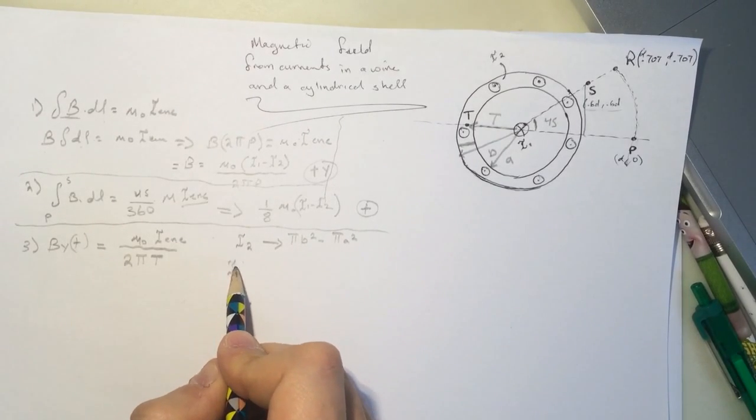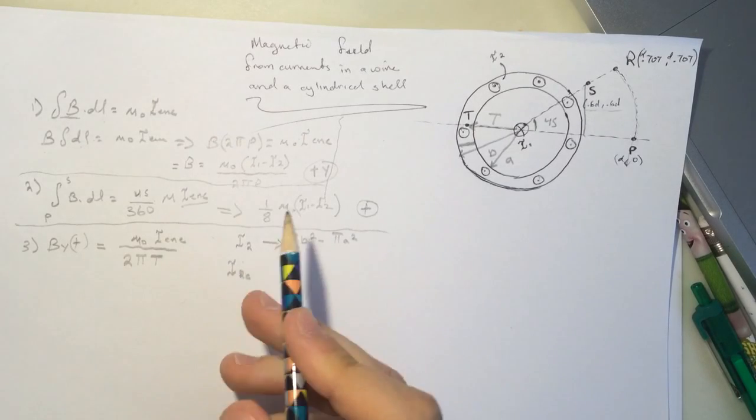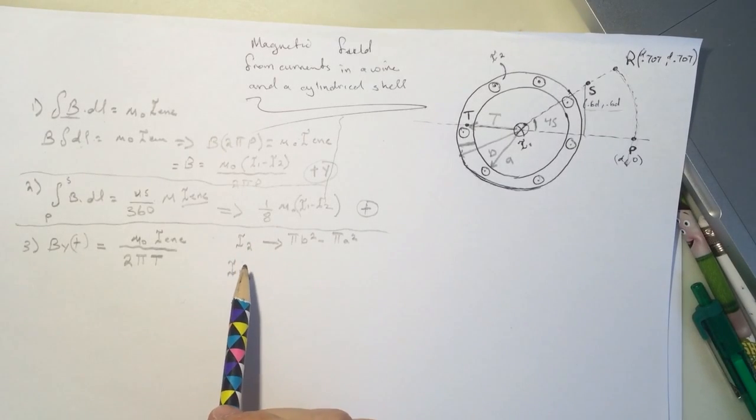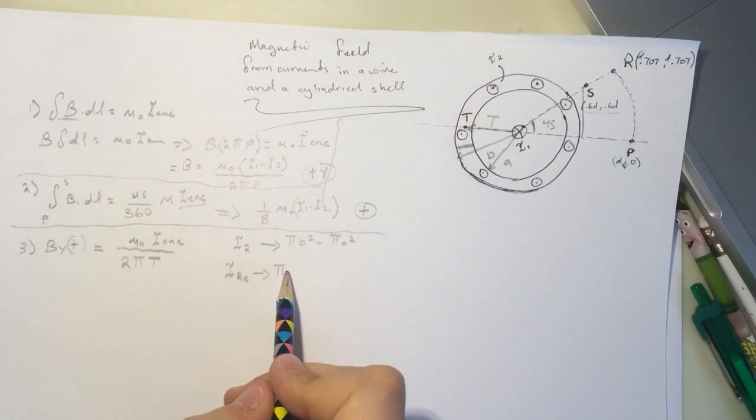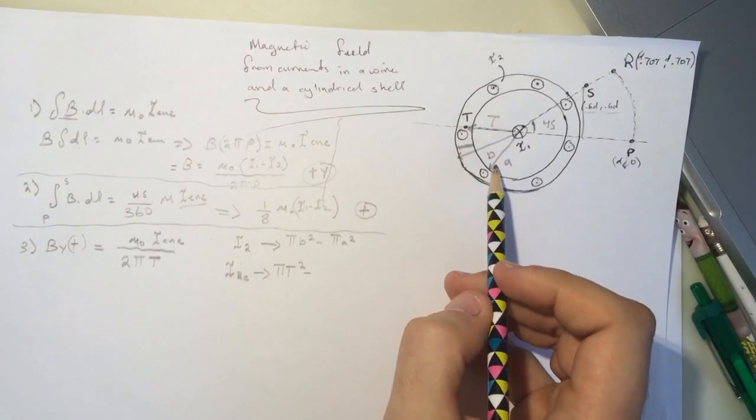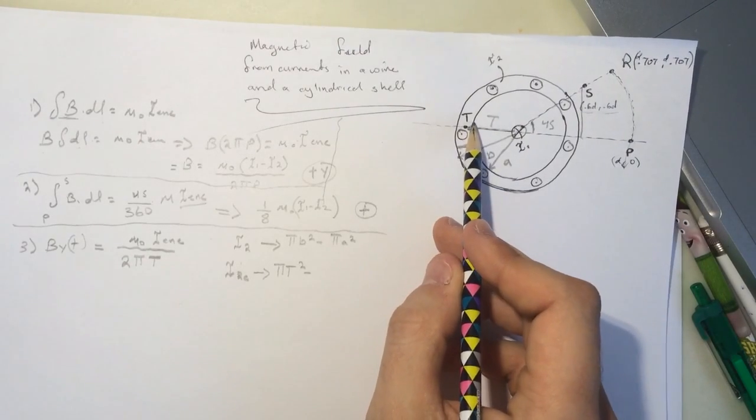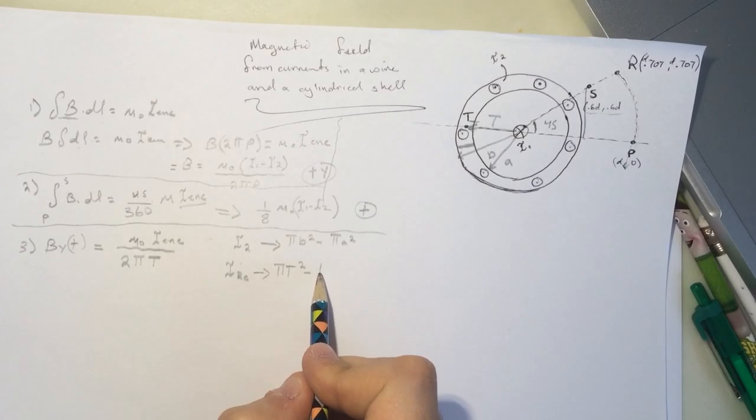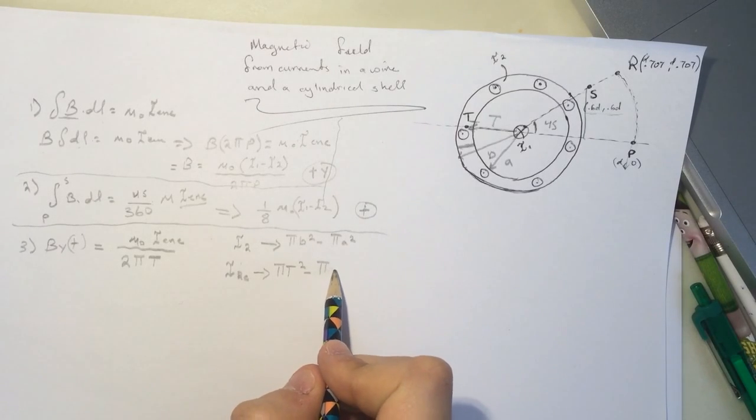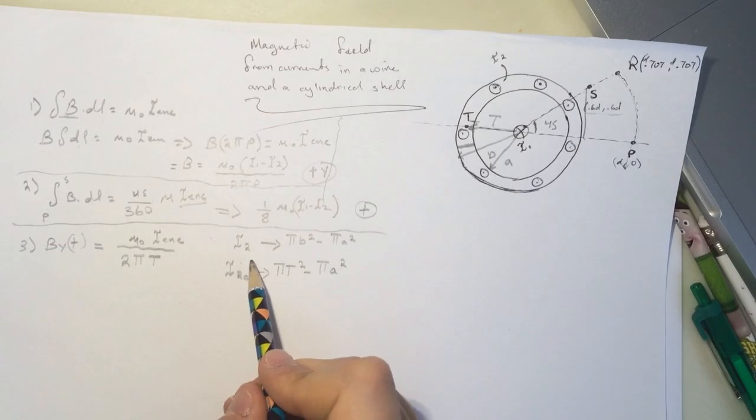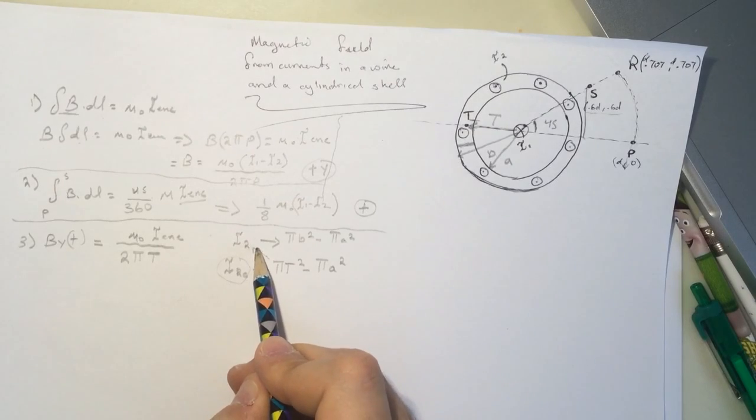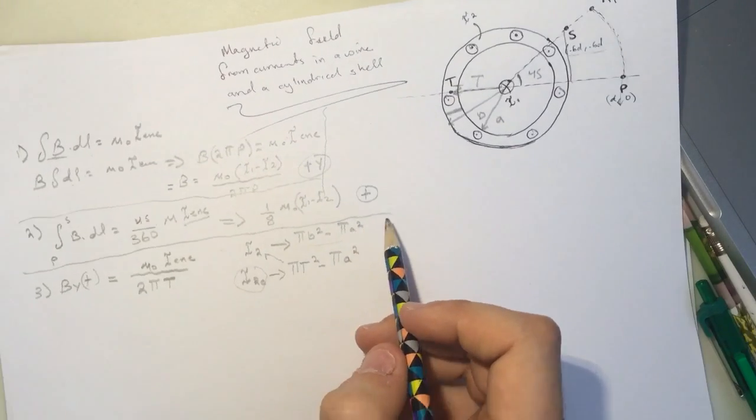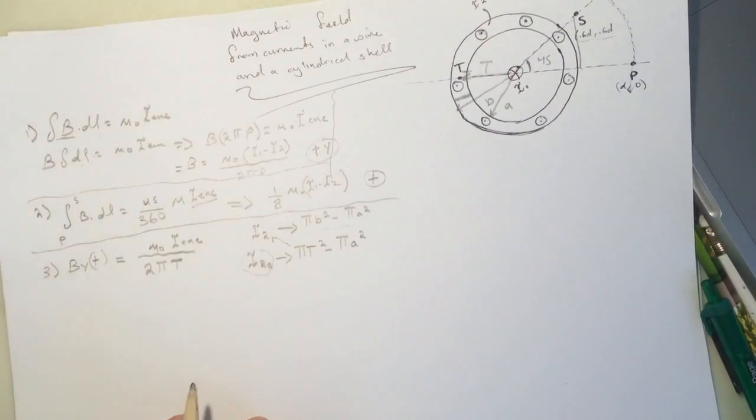And the current we want to know, not the charge, the current enclosed, will be pi t squared minus a squared. Right, from here to here, just this part. So this is what we are trying to find. So it's like a ratio. Now we multiply this by this, divide it by this guy.